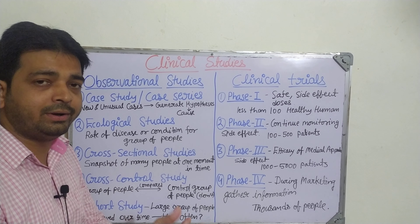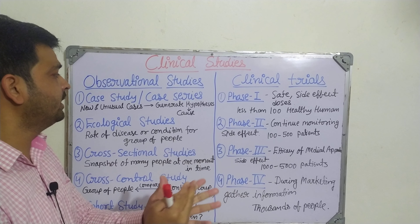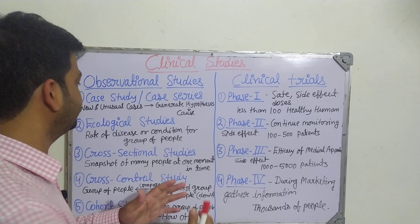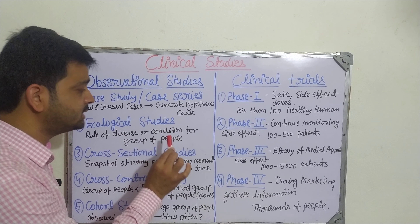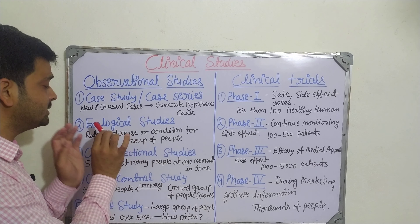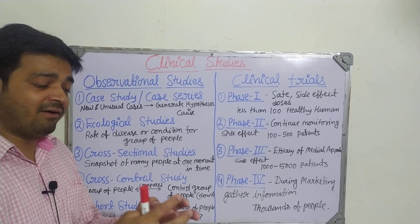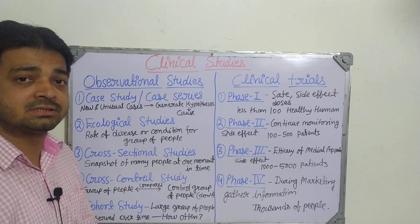Under observational studies, there are five types which are conducted with a particular disease or during a pandemic. Clinical trials are conducted when we are developing a new drug or new vaccine. The five types of observational studies are: case study or case series, ecological studies, cross-sectional studies, case-control study, and cohort study.